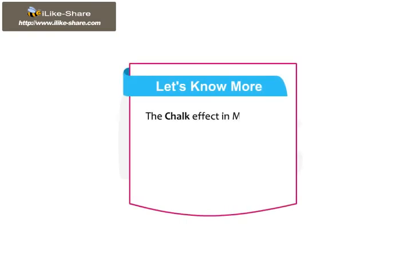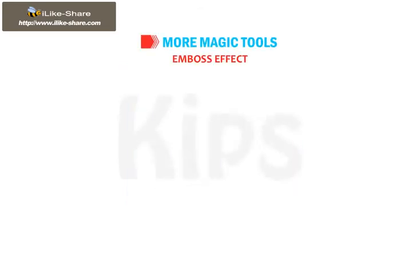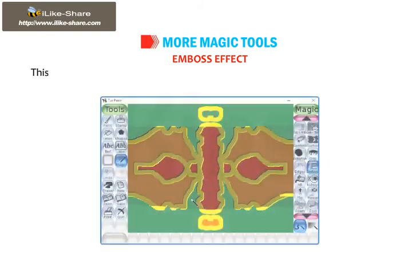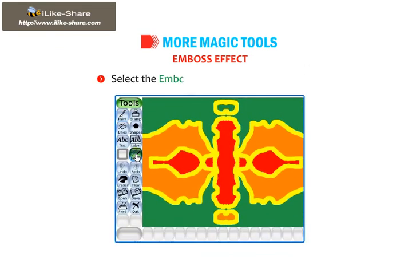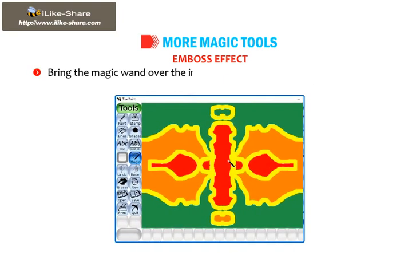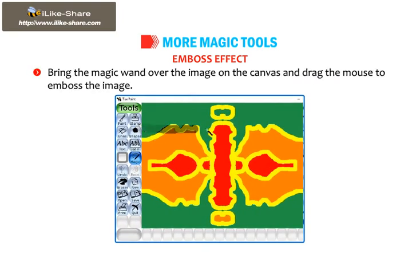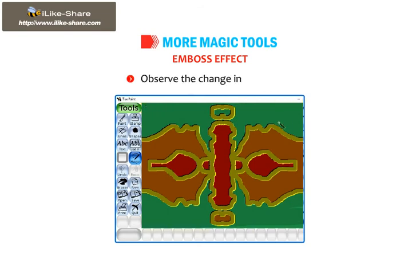The chalk effect in magic tool makes parts of the picture look like a chalk drawing. Using the glass tile effect, you can see your drawing through glass tiles. This magic tool gives a raised effect to an object from the surface that you have drawn. Select the emboss effect from the selector. Bring the magic wand over the image on the canvas and drag the mouse to emboss the image. Observe the change in the image.